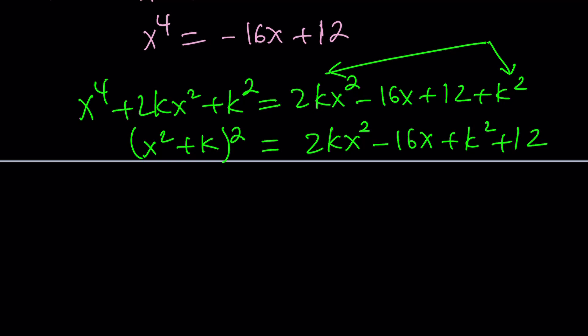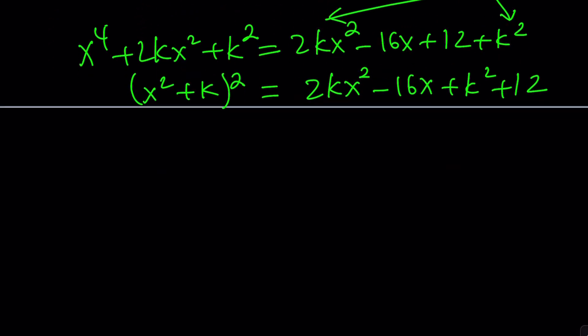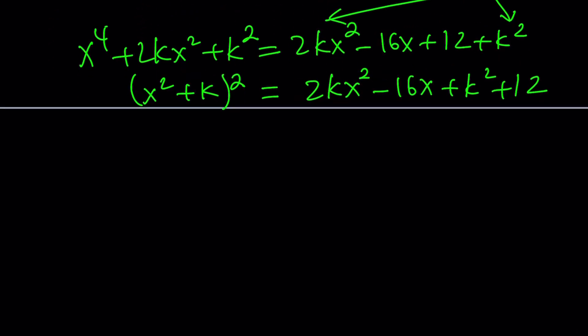We should also have a perfect square on the right hand side. I mean, on the left hand side, we have a perfect square. Same thing should happen on the right hand side. But how do you make a quadratic a perfect square? The discriminant delta should be equal to 0. So go ahead and find discriminant from here. The discriminant is going to be b squared, 256 delta, minus 4ac. 4 times 2k times k squared plus 12. And that's supposed to equal 0.